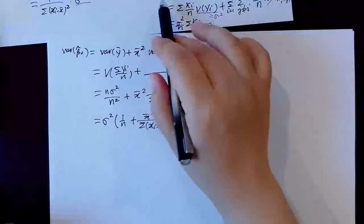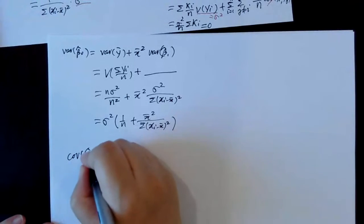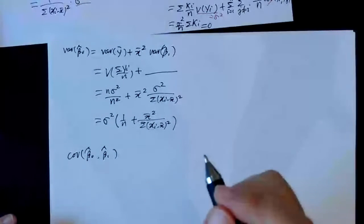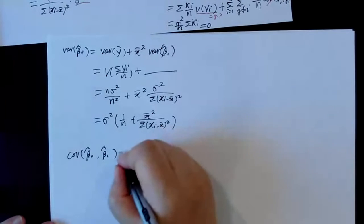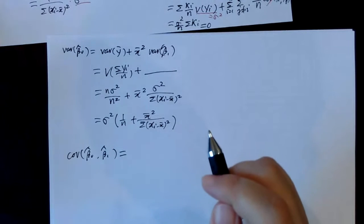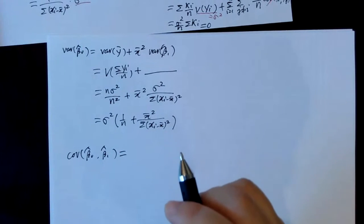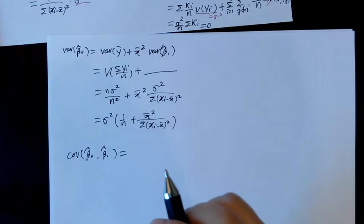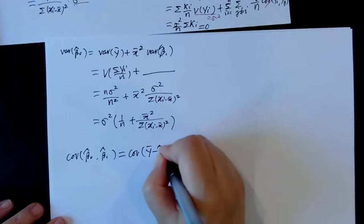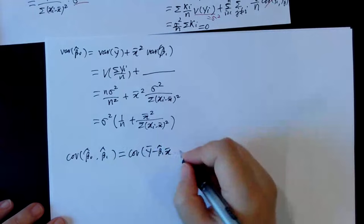Because the covariance of y-bar and beta-1-hat equals zero, we can also derive the covariance between beta-0-hat and beta-1-hat, which turns out to be negative x-bar times the variance of beta-1-hat.